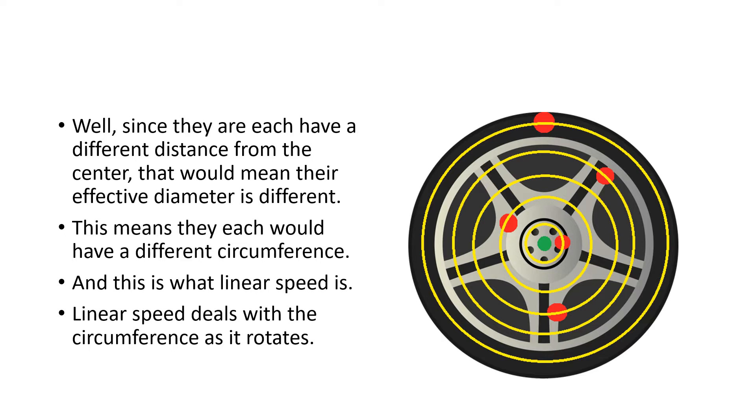Well, since they each have a different distance from the center, that would mean their effective diameter is different. This means they each would have a different circumference. And this is what linear speed is.